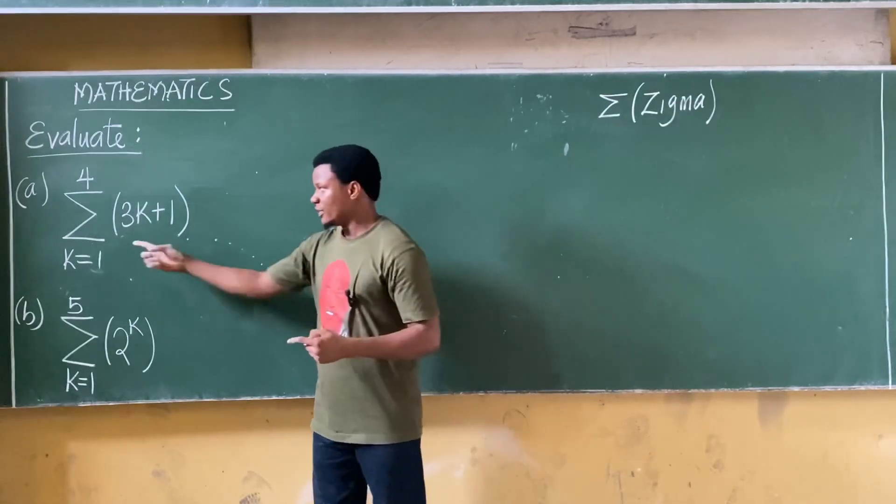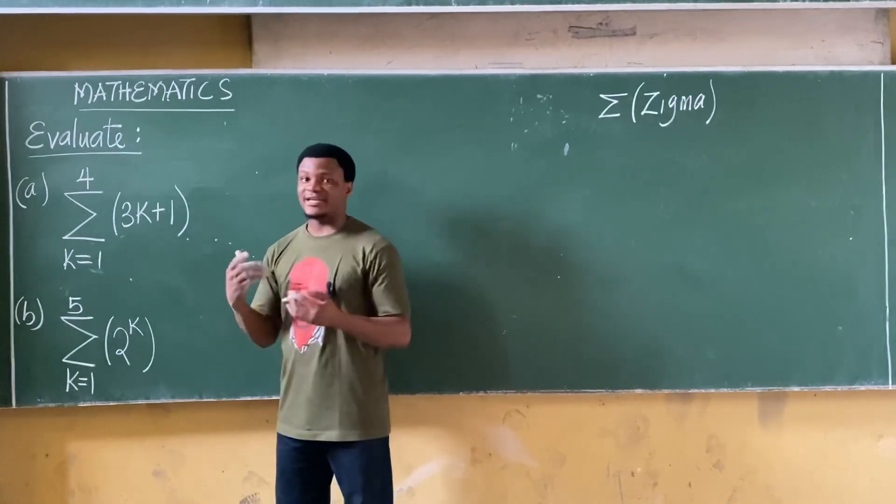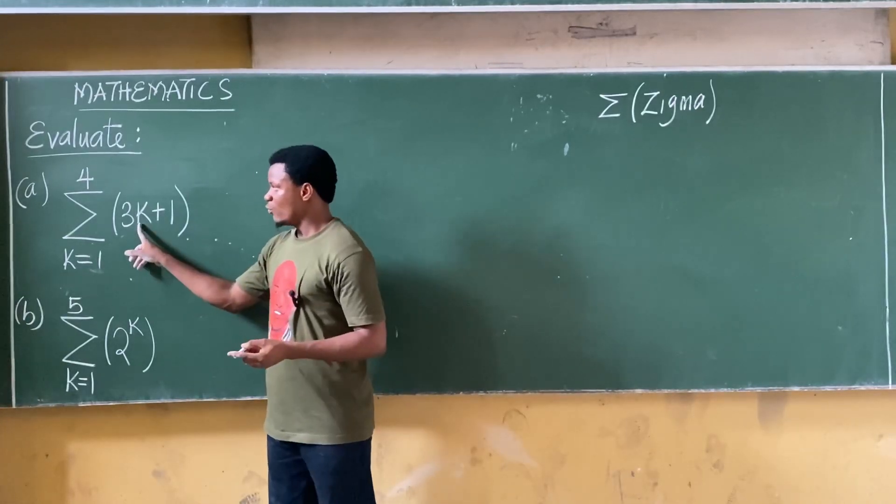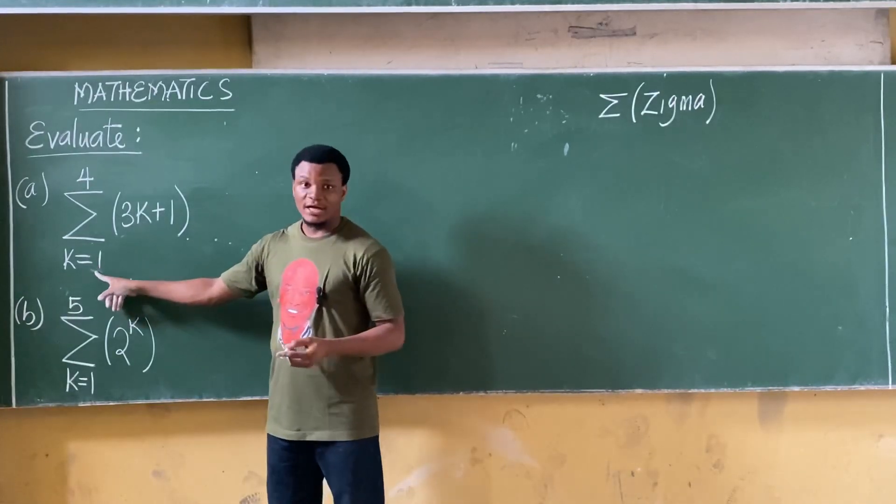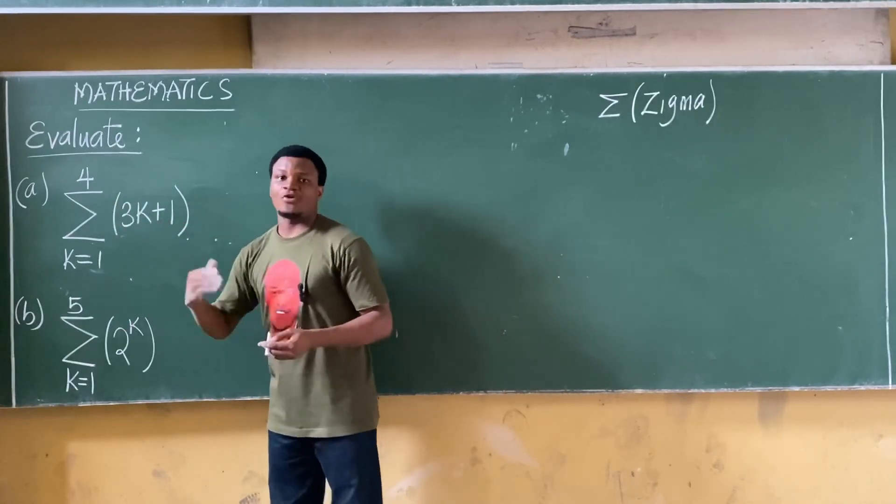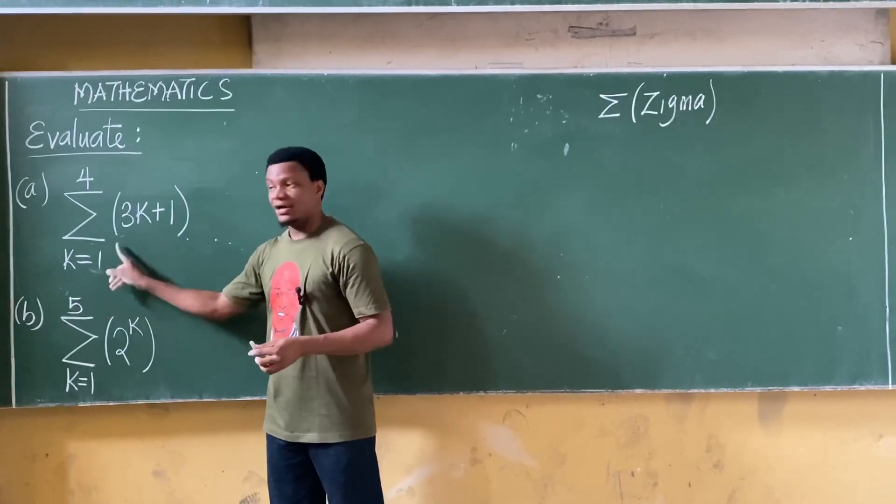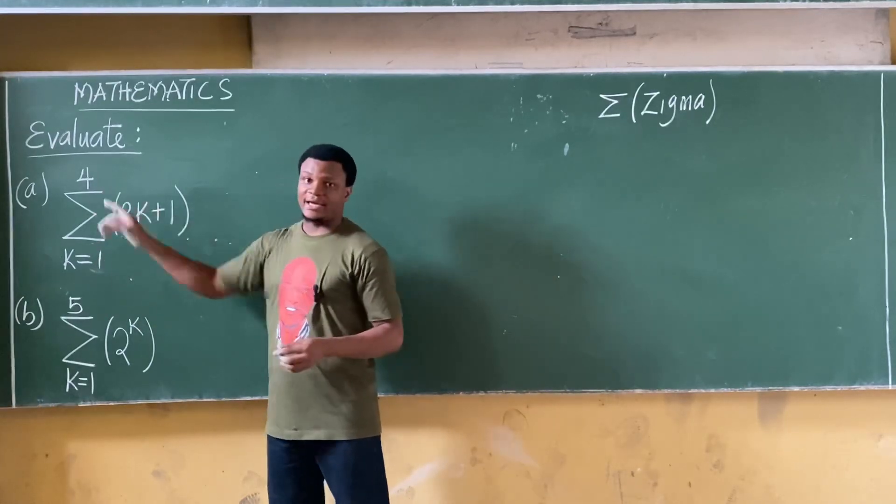of this particular term such that the variable, which in this case is k, will start at one and then will be increased until we have four. So for each summation we are doing, we're taking k as the number here until we get to the number here and then we stop.